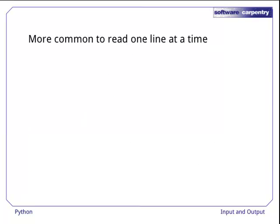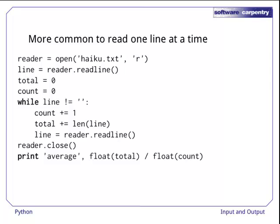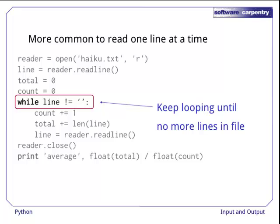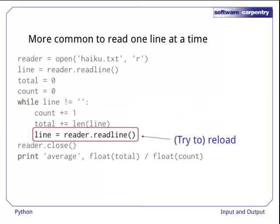Read is the most fundamental way to get data from a file, but it's more common to read data a line at a time. To show how this works, here's a program that calculates the average length of the lines in a file. After opening the file, it uses ReadLine to read the next line of text from the file. As with Read, this will return an empty string when there's nothing left in the file, so our program loops until it gets an empty string. And inside the loop, it uses another ReadLine call to try to get that next line.